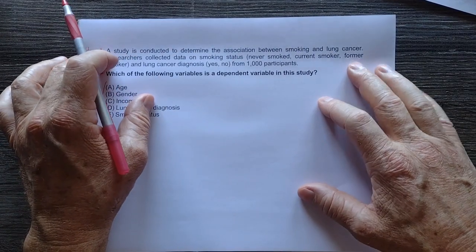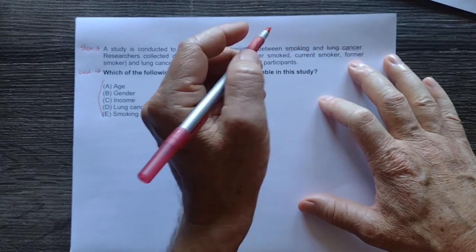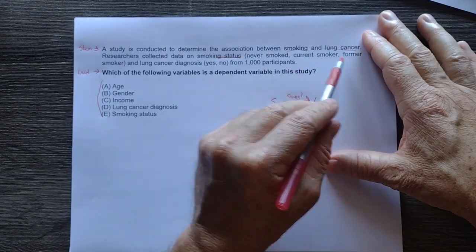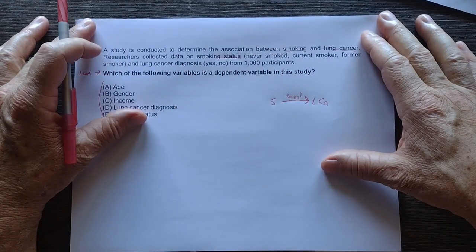A study is conducted to determine the association between smoking and lung cancer. We're looking at smoking and lung cancer. This is going to be the causal pathway. Researchers collected data on smoking status—they either never smoked, they were current smokers, or they were former smokers. That looks like categorical data.